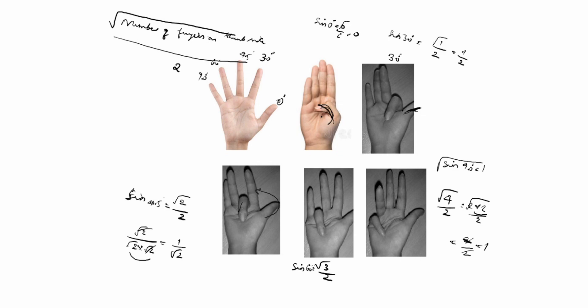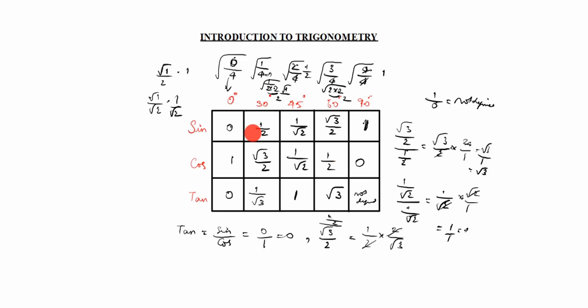This is the second method. You calculate sin only, then reverse for cos, and the tan value comes from that. Thanks for watching this video.